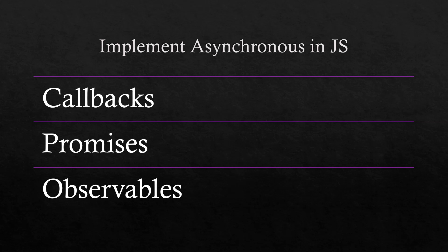For implementing asynchronous behavior in JavaScript, we first had callbacks — I have a separate session on that. After callbacks had some issues, promises came along. After promises, we have observables. Observables are a better, higher-level way of handling async operations. Even in observables we use callbacks and promises, but observables have many advantages over promises, just as promises have advantages over callbacks.